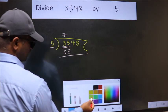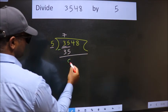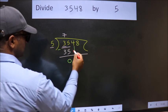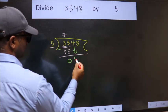Now we should subtract. We get 0. After this, bring down the next number. So, 4 down.